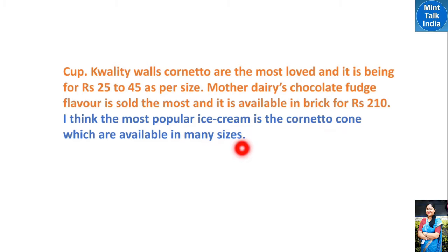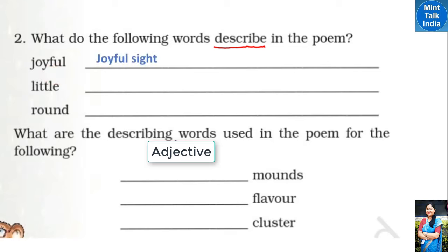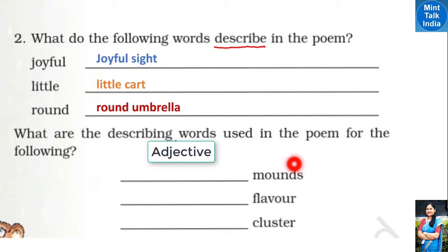Question number 2: Next is about describing words (विशेषण शब्द) — words that describe the quality or speciality of something. We have to identify what is being described by each word in the poem. 'Joyful' — the children saw a joyful sight. 'Little' — there was a little cart in the poem. We will write the describing words used in the poem for the following items.